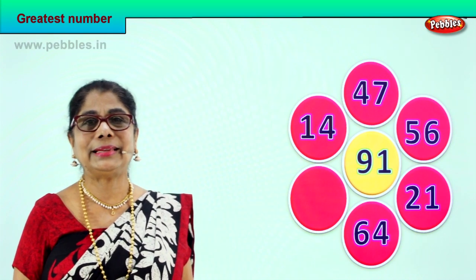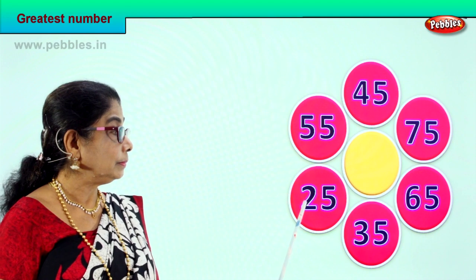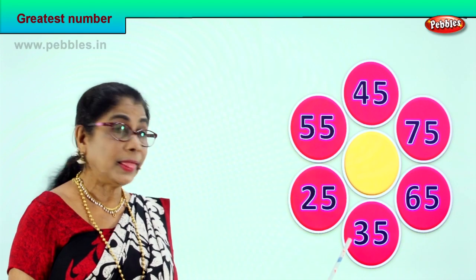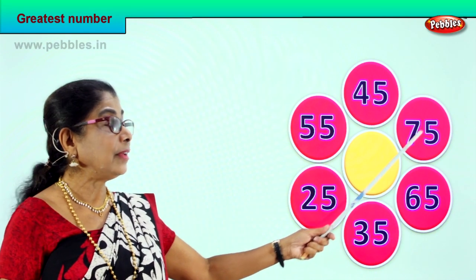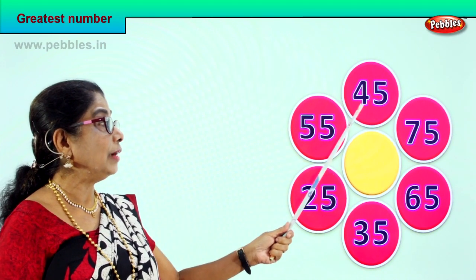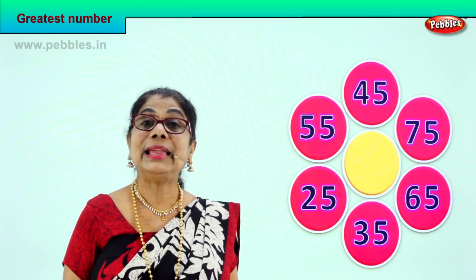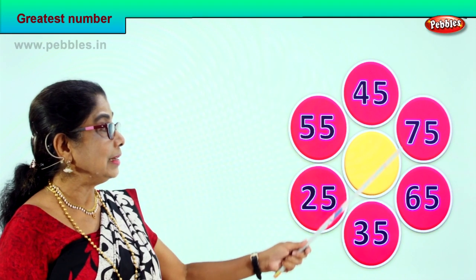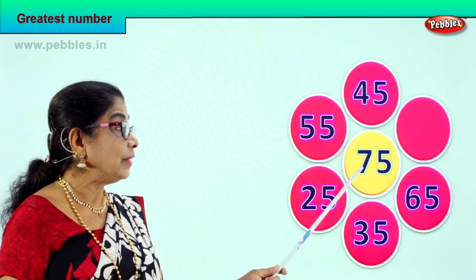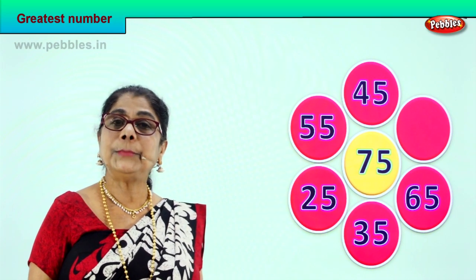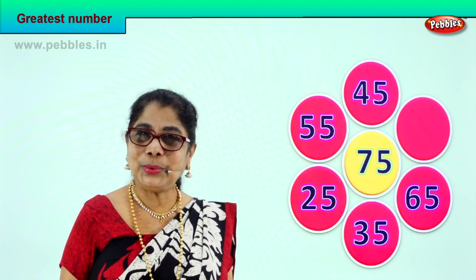Let's go on to the next exercise. 55 has 5 tens. 25 has 2 tens. 35 has 3 tens. 65 has 6 tens. 75 has 7 tens. And 45 has 4 tens. Among these numbers, which number has the highest number of tens in the tens place? Certainly — 75. 7 tens and 5 ones — 75 is the biggest number of all because there is 7 in the tens place, 7 tens. Did you enjoy?